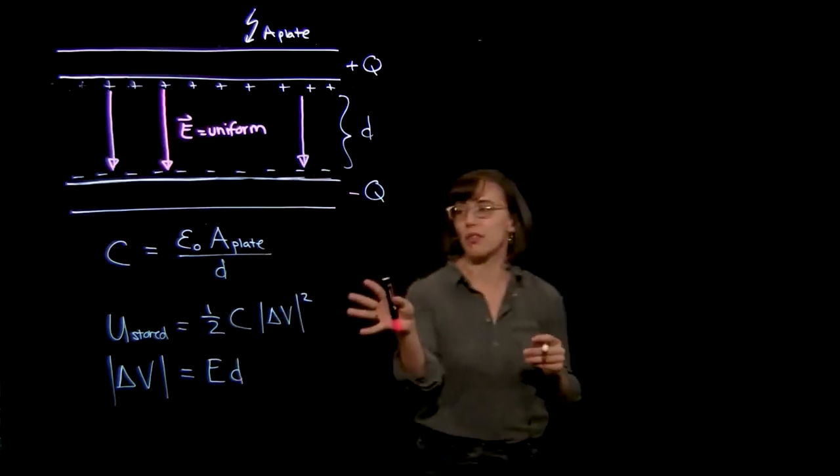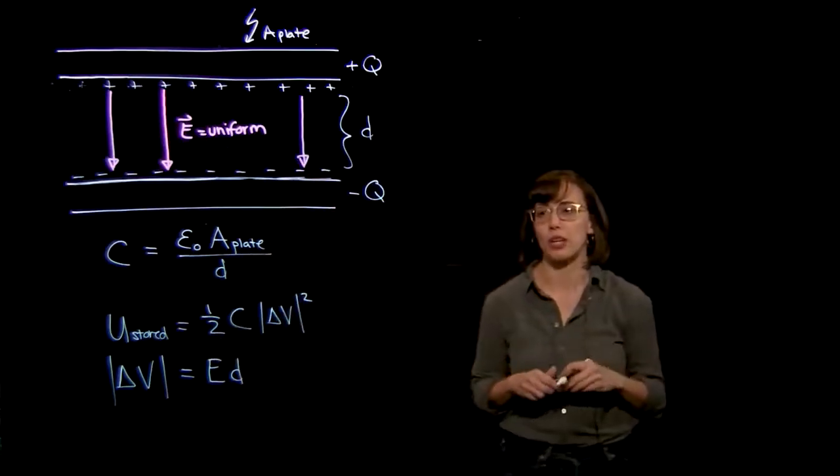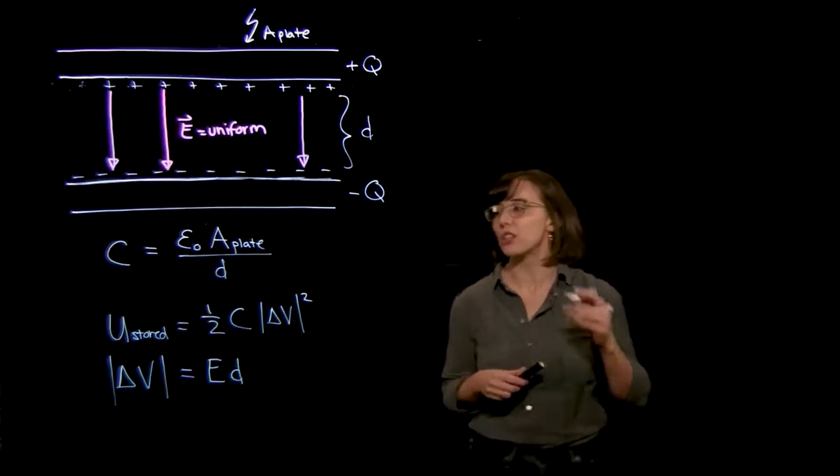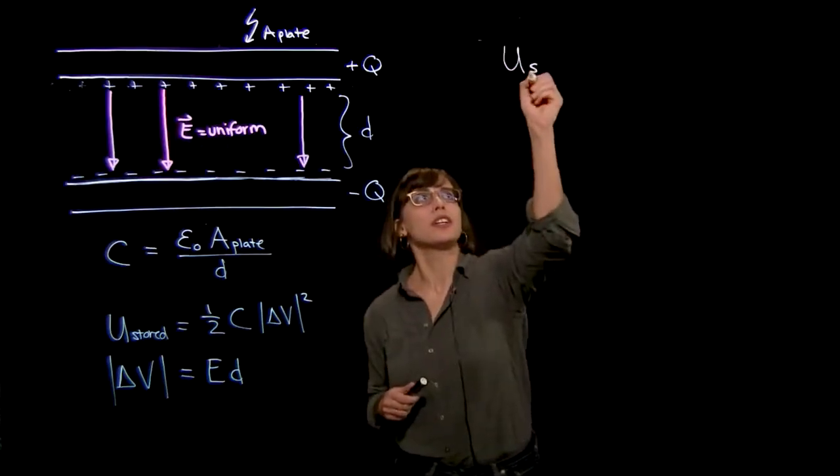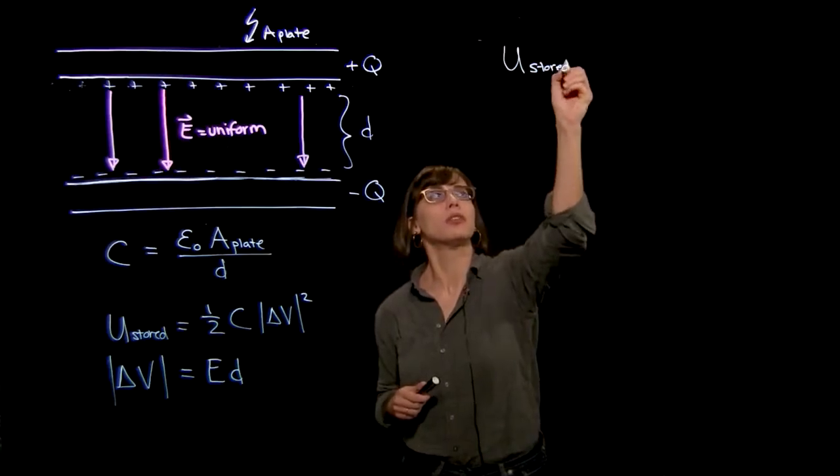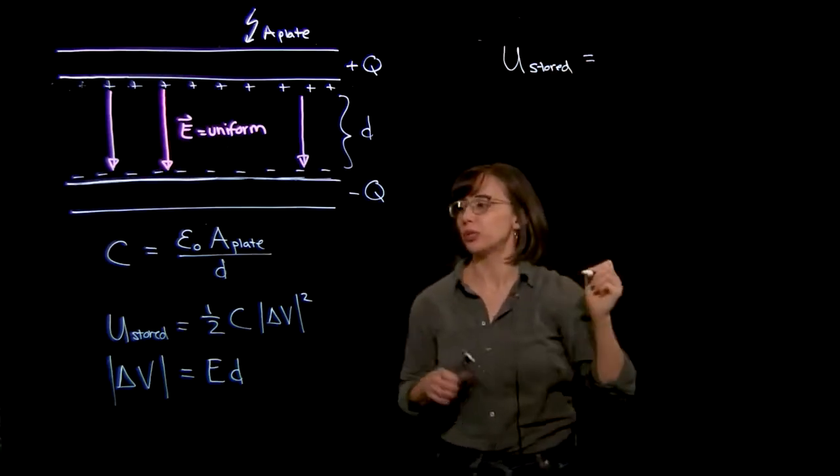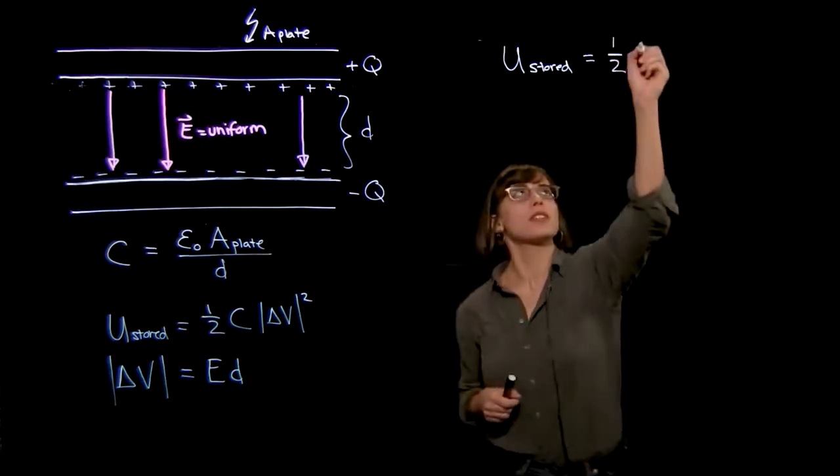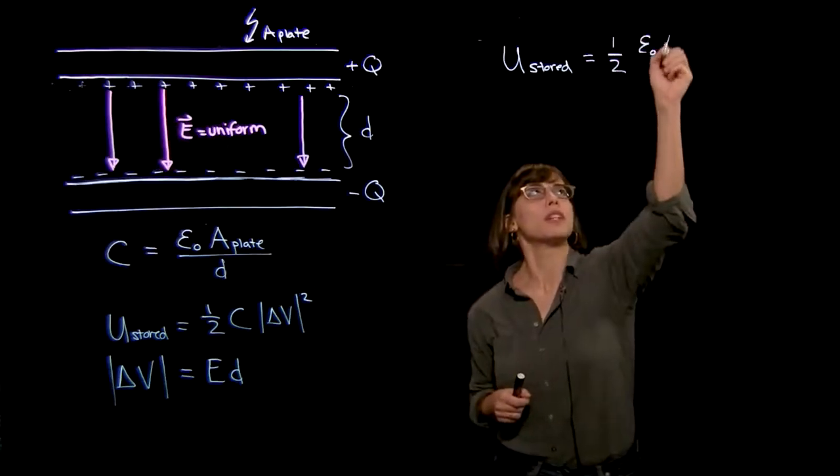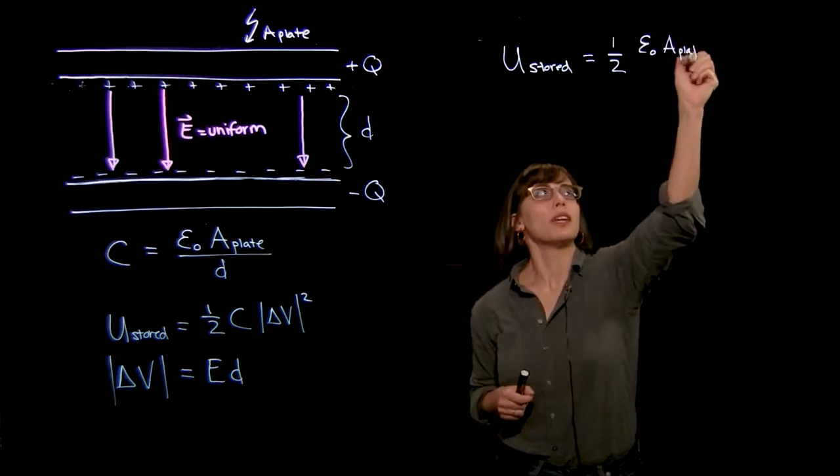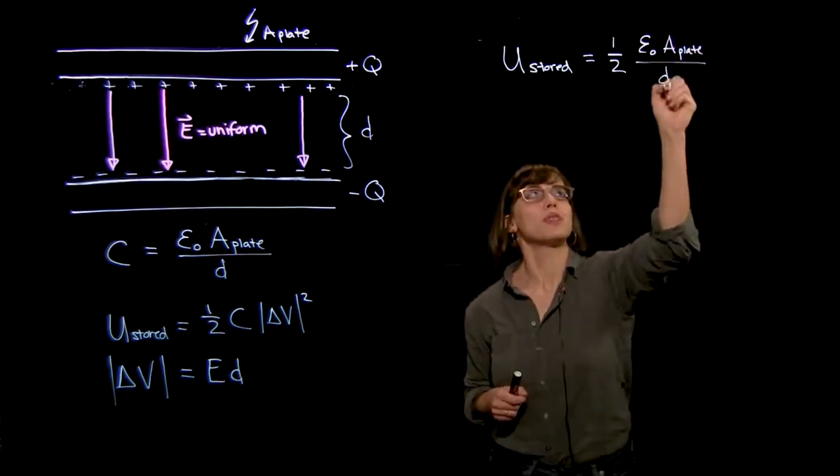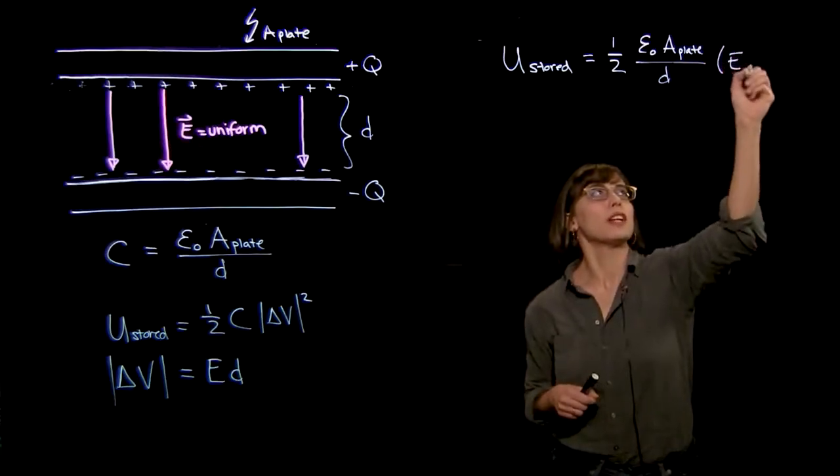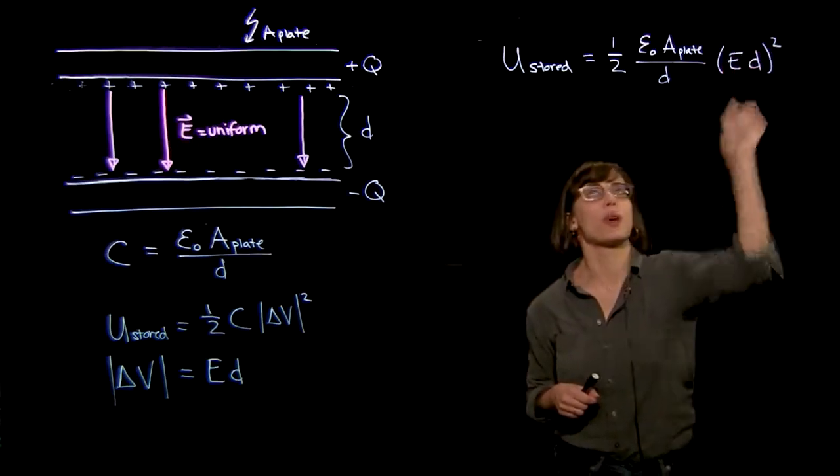Now we can take what we have over here and put it together and see what we can extract about the energy stored in this configuration. So let's put all this together. The energy stored is equal to, let me plug it all in, one-half, my capacitance is epsilon zero times the area of the plate divided by the distance between the two, and now I have an expression for my delta V, and that is just electric field times the distance squared.